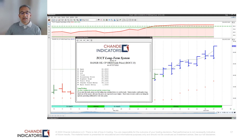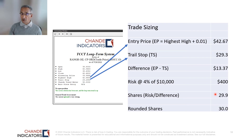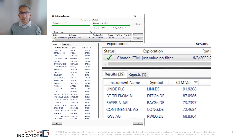To reinforce the mechanics, here's a summary of the long-term system. The entry occurs on a specific bar — on the previous bar we knew the entry price and the exit price, allowing us to calculate position size. For Ranger Oil, the entry price was a tick above the 100-day high at $42.67, the trailing stop was at $29.30, a difference of $13.37. For a $10,000 account with 4% risk, the risk amount is $400, which converts to a share count of 29.9 — rounded to 30 or 29 shares.